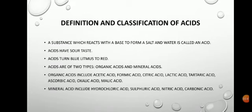If we cut a lemon and taste it, it appears to have a sour taste. The sour taste of lemon is due to the presence of citric acid in it. Similarly, raw mango, raw grapes, orange juice, curd, sour milk, vinegar, and tamarind are all sour in taste due to the presence of acid in them. So one characteristic of acids is that they have a sour taste.